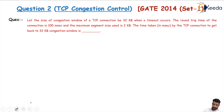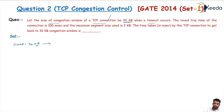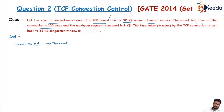In the question we are given that the size of the congestion window of a TCP connection is equal to 32 kilobytes. When a timeout occurs during transmission, there is high congestion in the network. The round trip time of the connection is equal to 100 milliseconds, and the maximum segment size (MSS) is equal to 2 kilobytes.